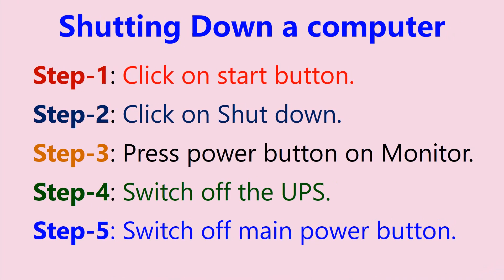To shut down a computer: first, click on the Start button, then click on Shut Down. Then press the power button on the monitor, switch off the UPS, and switch off the main power button.